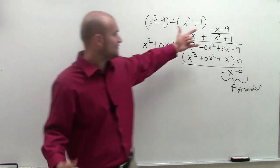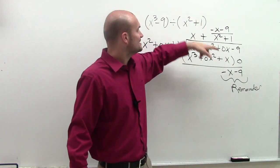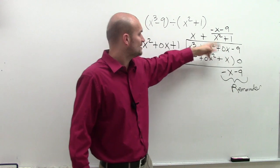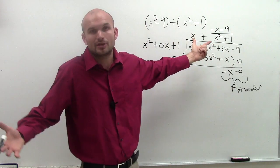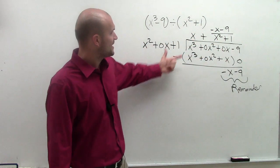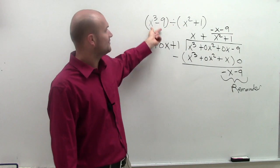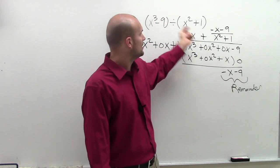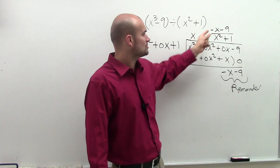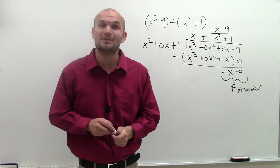All right? So remember, whenever you have a remainder, just take your remainder, divide it by your divisor, and add it to the quotient that the rest of your quotient went in. So again, this polynomial does not evenly divide into that. And so we're left with a quotient with our remainder. So there you go, ladies and gentlemen.